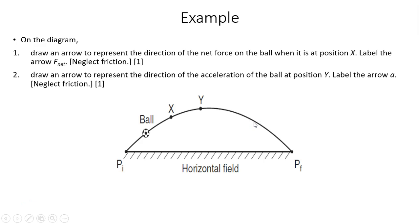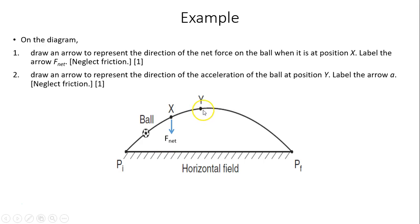Another example: on the diagram, draw an arrow to represent the direction of net force on the ball at position X, and label it F-net. Remember, the only force is gravity, so the arrow points downward. Then draw an arrow for the direction of acceleration at position Y — since gravitational acceleration is also downward, that arrow points downward as well.